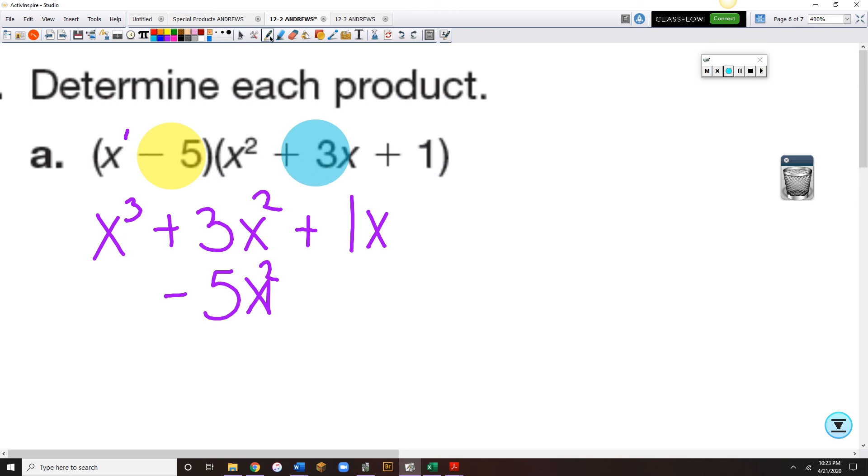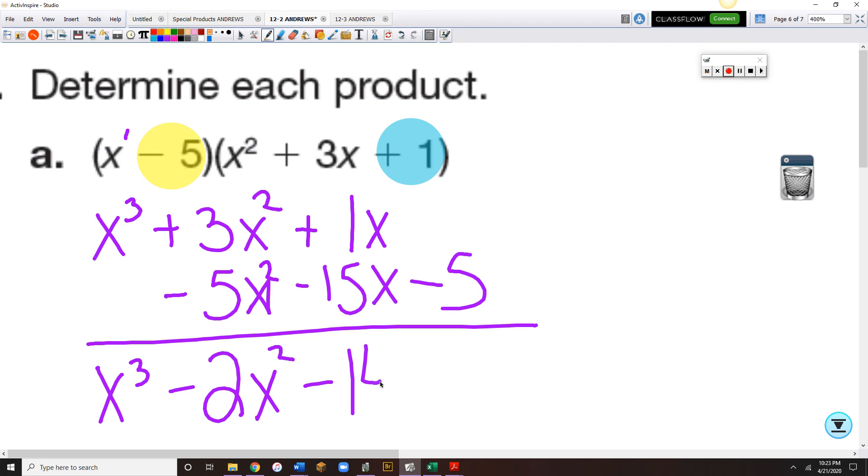Okay? So minus 5 times a plus 3 is a minus 15x. And a minus 5 times a plus 1 is a minus 5. So lining up my like terms makes simplification easy. So the x cubed comes down a plus 3 and a minus 5, making a minus 2. Bring down my x squared. A plus 1 and a minus 15 is a minus 14. Carry down the x. And minus 5.